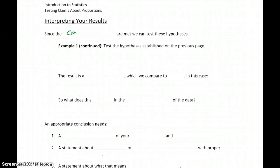Since the conditions are met to test a claim about a proportion, we can go ahead and test the hypotheses that we established in example 1. So what we'll do in a second is switch over to StatCrunch. We'll actually conduct the hypothesis test itself.